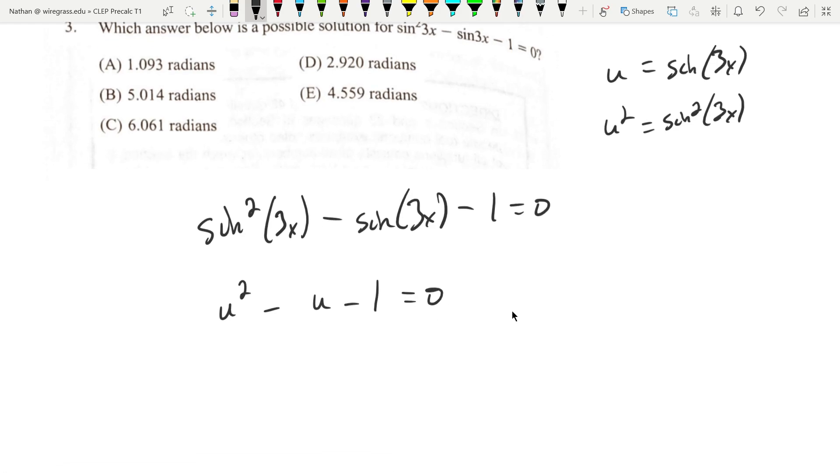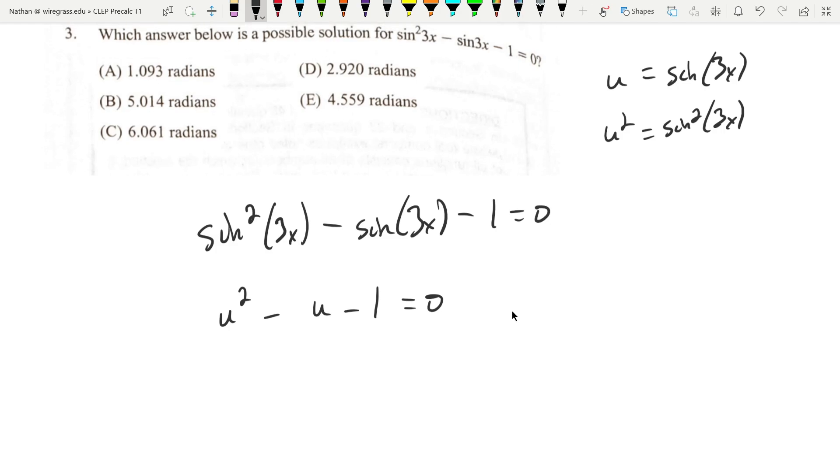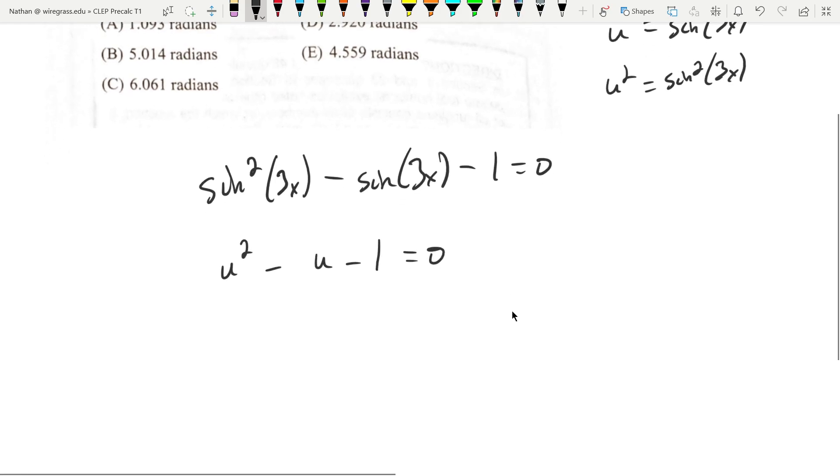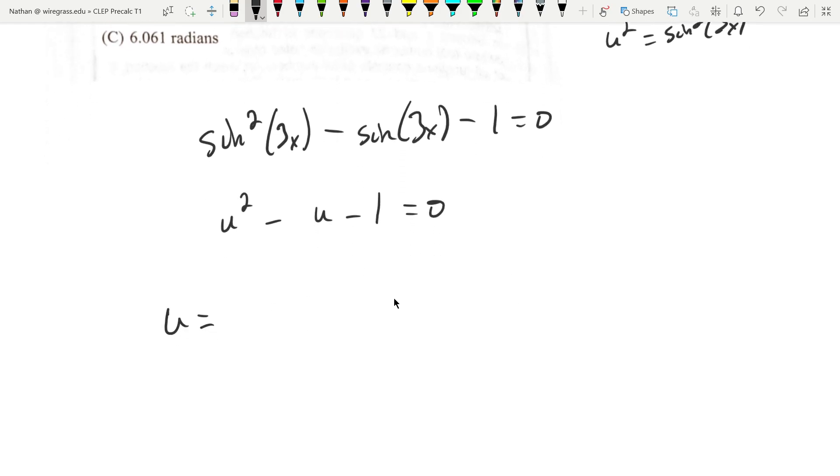To solve this, we can't factor it because there's no factored form. We're going to have to use the quadratic formula. So u equals negative b, that's positive 1, plus or minus the square root of b squared, which is positive 1, minus 4 times a times c. Since a is 1 and c is negative 1, it's going to be plus 4 times 1 times 1, all over 2 times a, which is just 1.